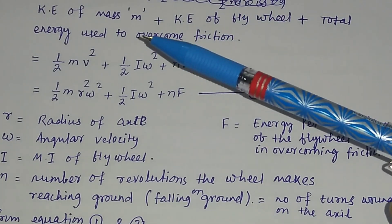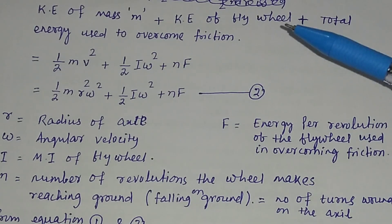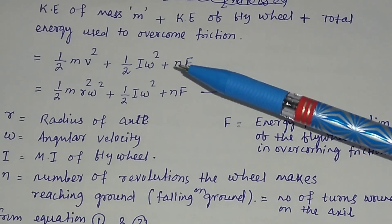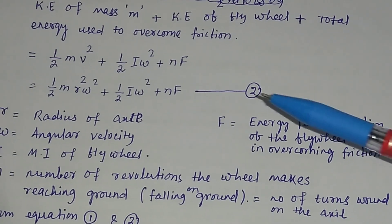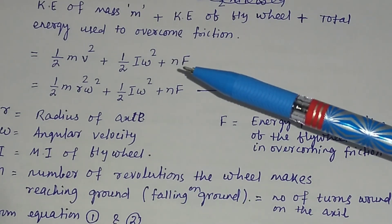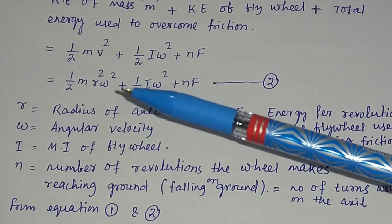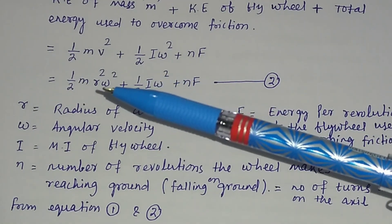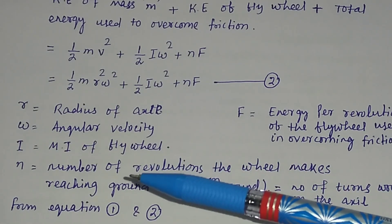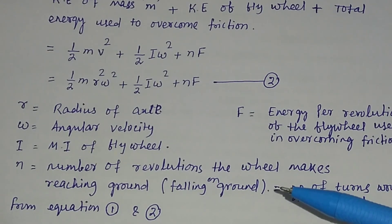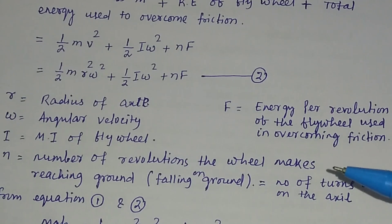The kinetic energy of mass m is equal to half mv², the kinetic energy of the flywheel is equal to half Iω², and the total energy to overcome friction is n × f, where f is the energy per revolution used in overcoming friction. Substituting v = rω, the equation becomes: mgh = half × m × r²ω² + half × Iω² + n × f. Here r is the radius of the axle, ω is the angular velocity, I is the moment of inertia of the flywheel, and n is the number of revolutions the flywheel makes as the mass reaches the ground — equal to the number of turns wound on the axle.